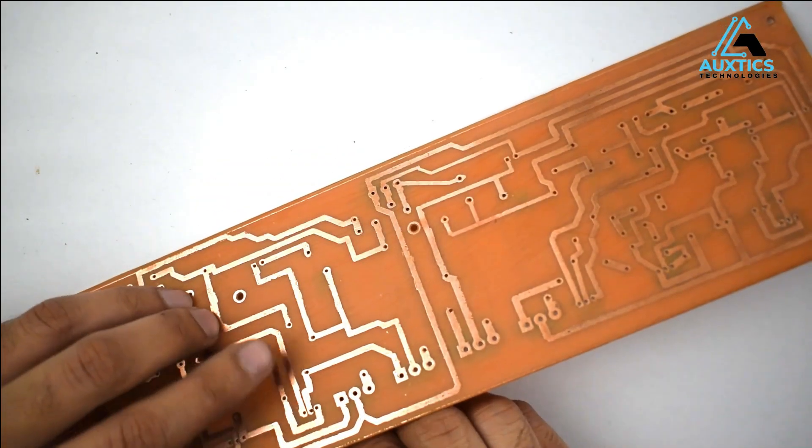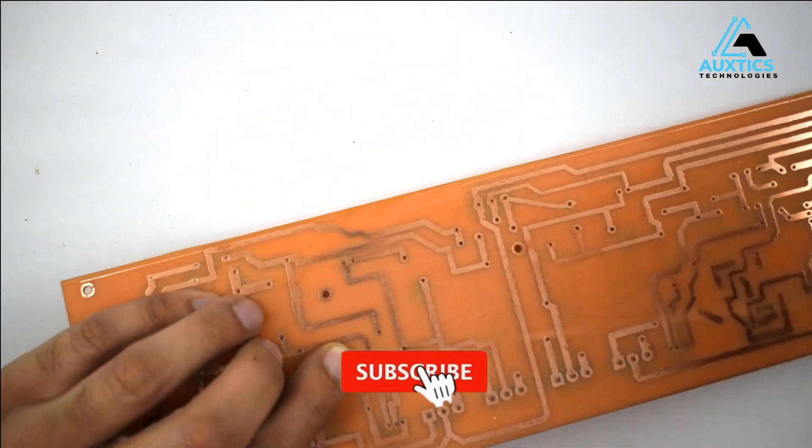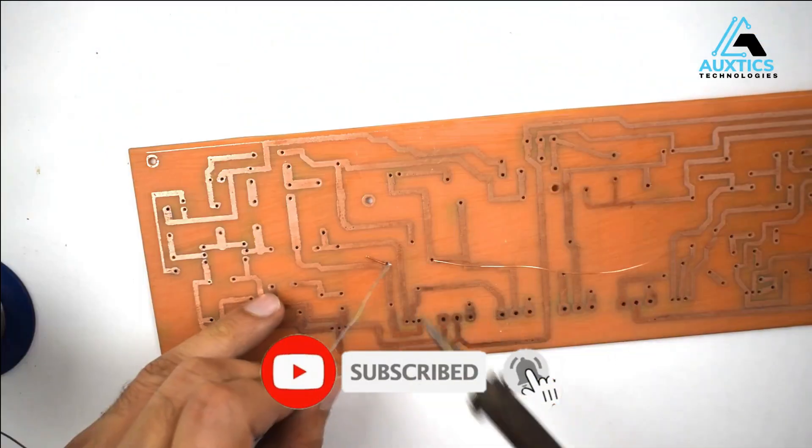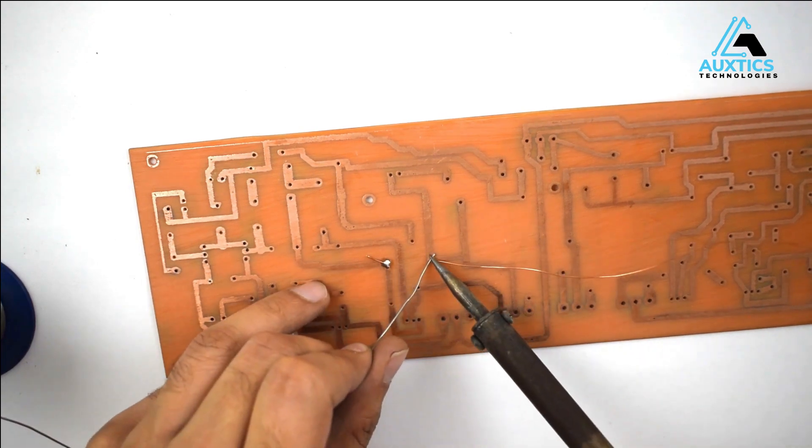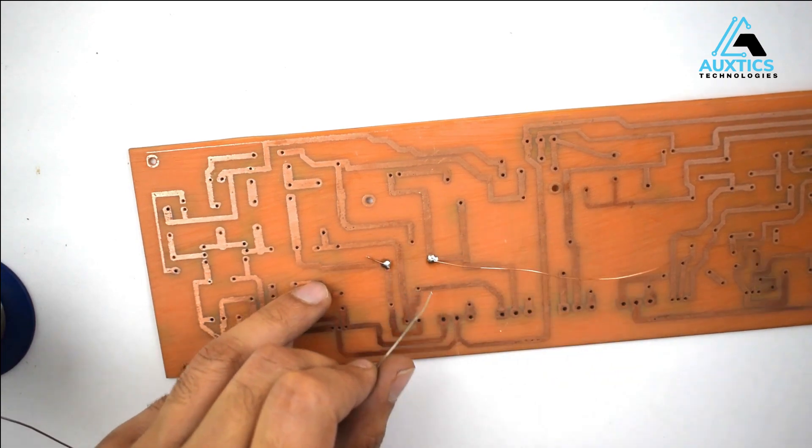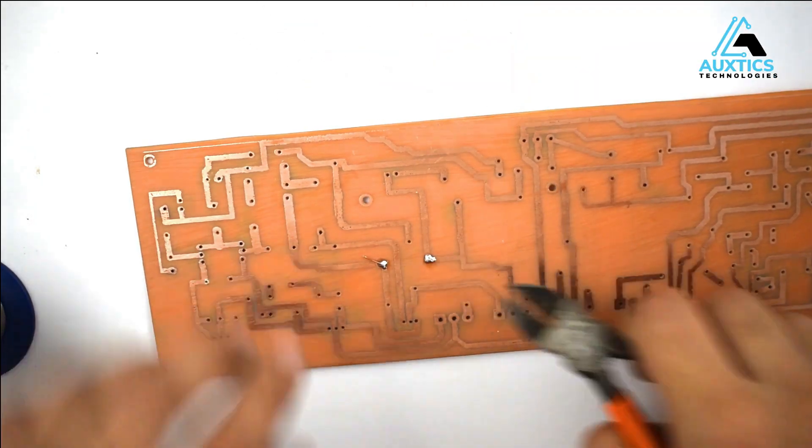We will simply place the jumper wires on the PCB like this and solder them, and after soldering, cutting the wires because the neatness is very important while working.